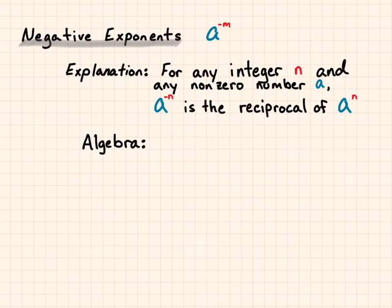Meaning if it's in the denominator, we put it in the numerator. If it's in the numerator, we put it in the denominator. So a to the negative n is the same as a to the negative n over 1, which becomes 1 over a to the positive n.